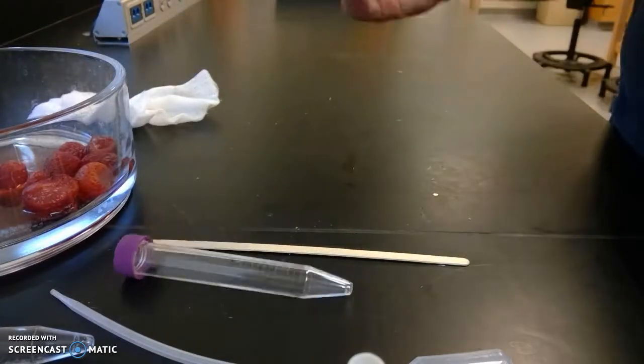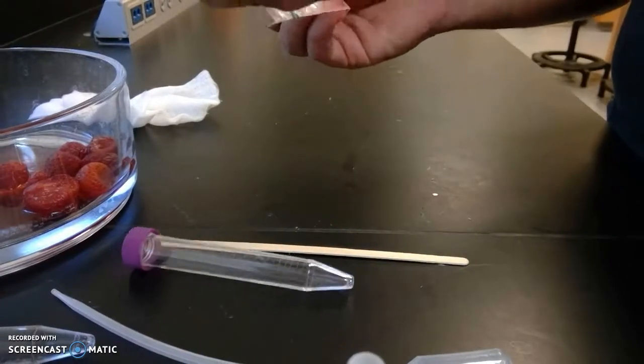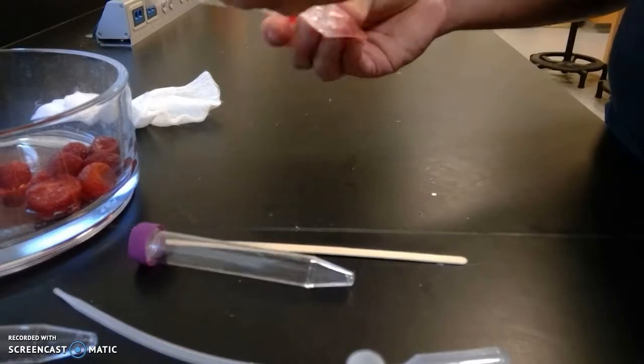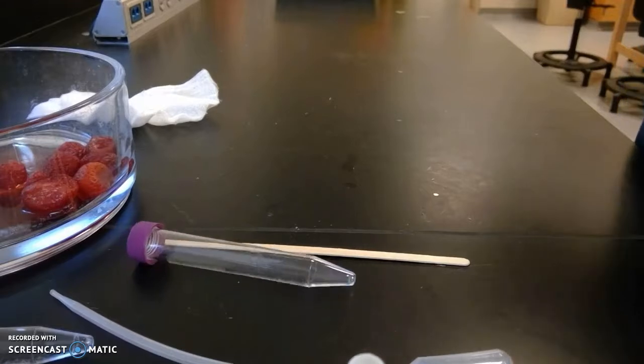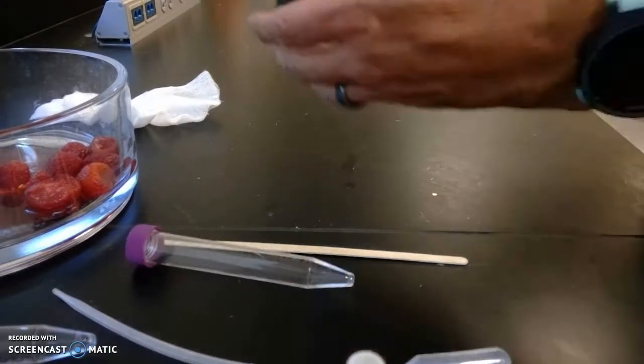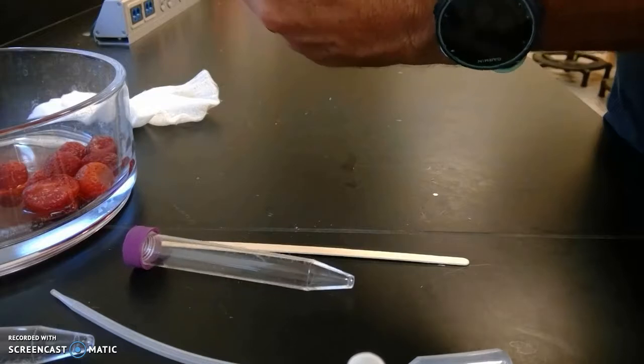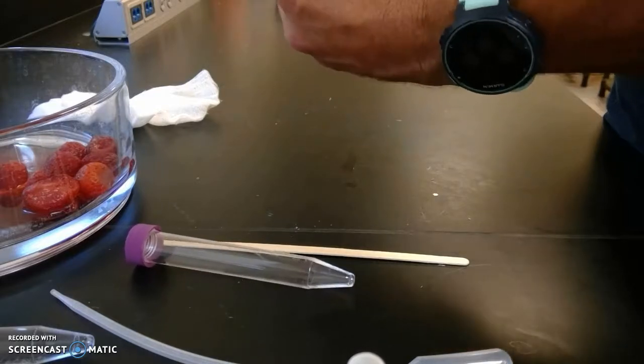We now have this mixture. Make sure there's no large pieces in it. This mixture of detergent and strawberries—the detergent broke apart the cells and the DNA is now free to leave the cells.